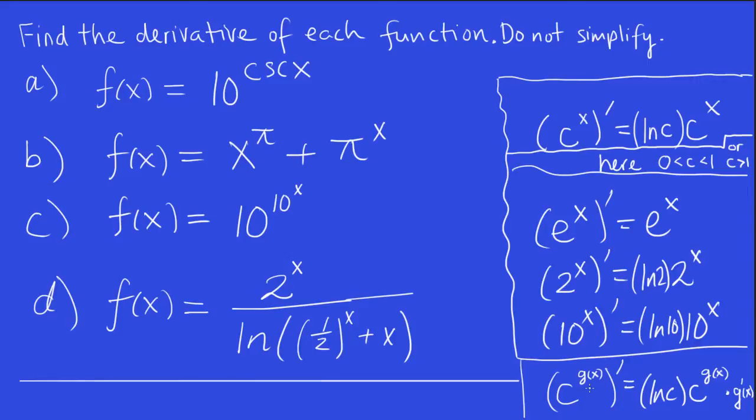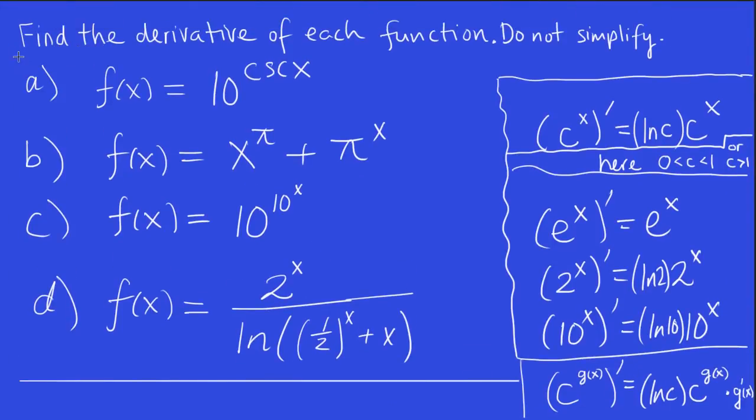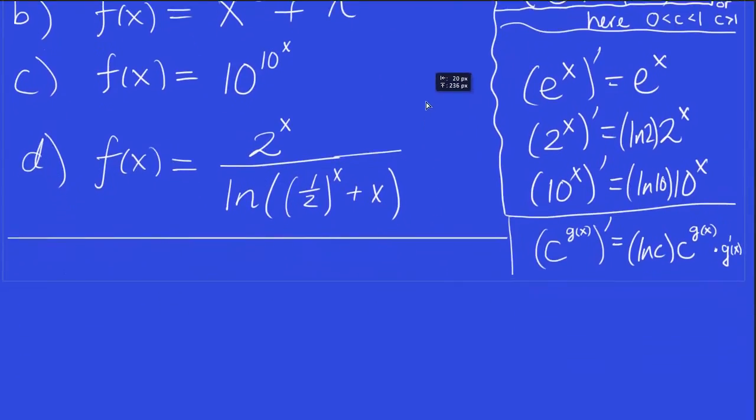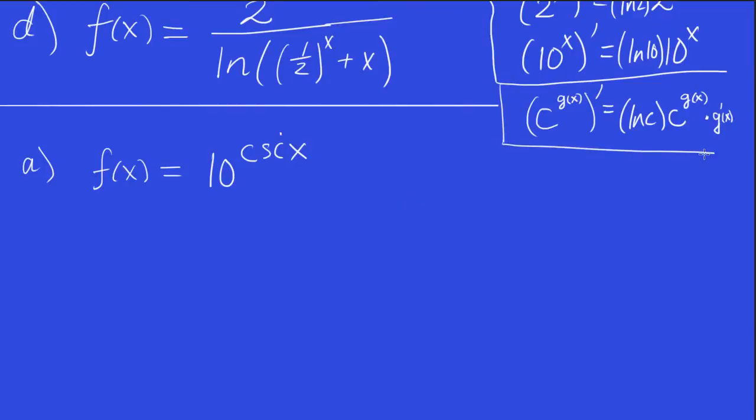So we're going to use this concept here in most of these, in a and c anyway. Great, let's try a. How are we going to approach this derivative? I think it's pretty straightforward. We're going to use this formula here, with c being 10, and g of x being cosecant x.